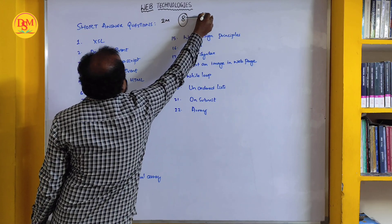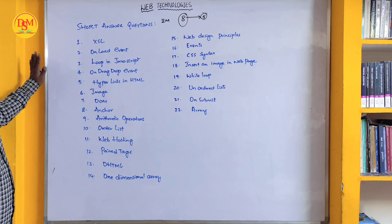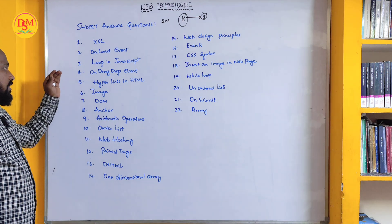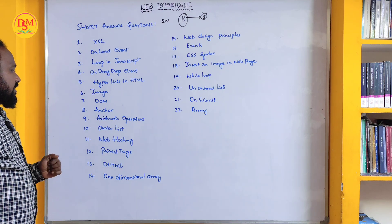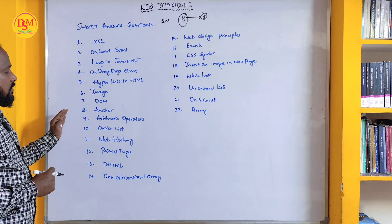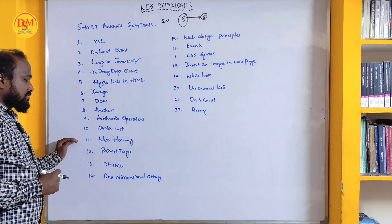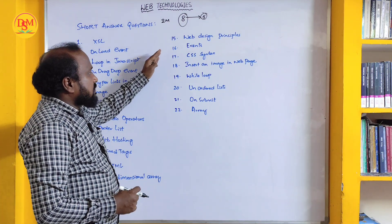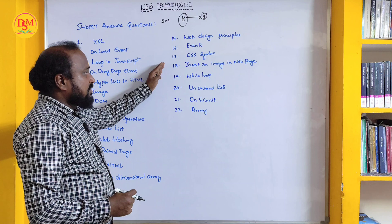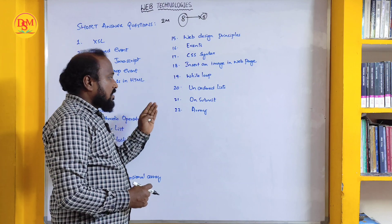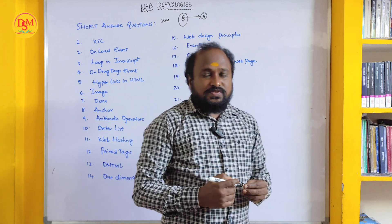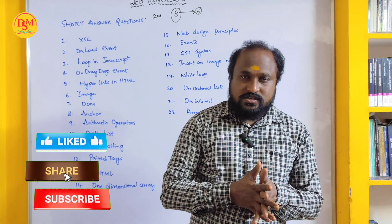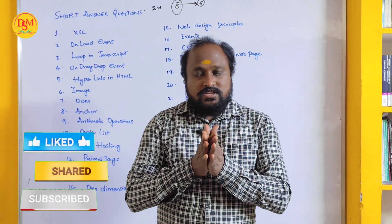The short answer questions include: XSL, onLoad event, loop in JavaScript, onDragDrop event, hyperlinks in HTML, image DOM, anchor, arithmetic operators, ordered list, web hosting, paid tags, DHTML, one-dimensional array, web design principles, events, CSS syntax, insert an image in a web page, while loop, unordered list, onSubmit, and array. Please share this video with all your friends so anybody can pass.